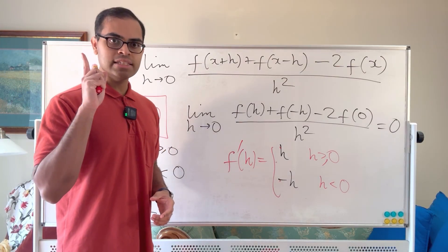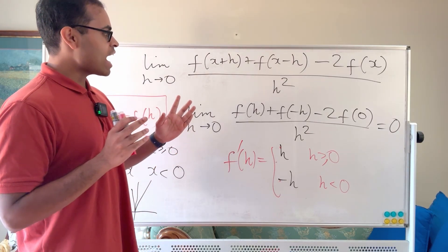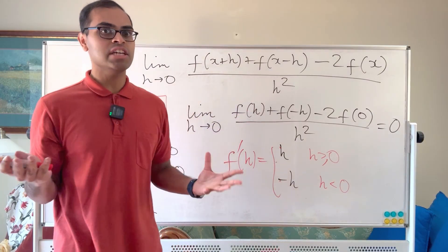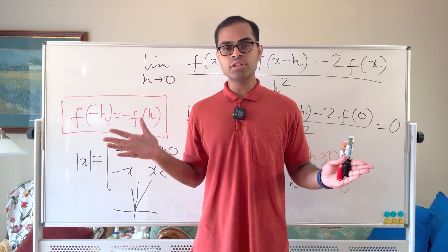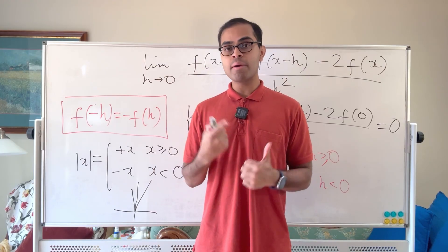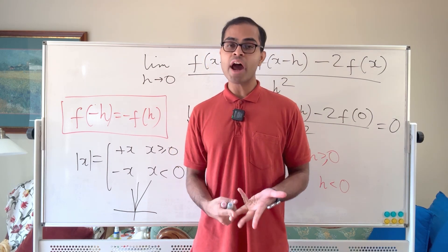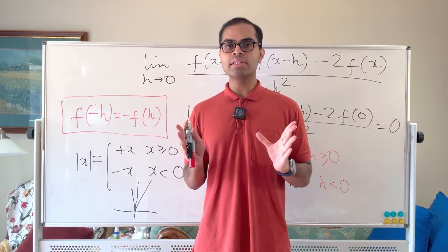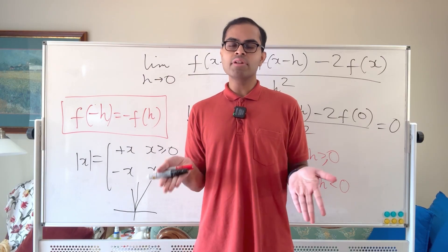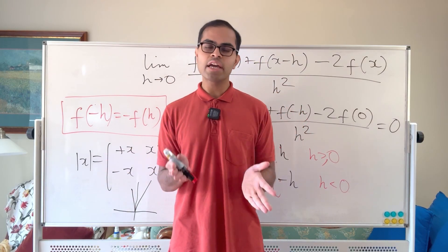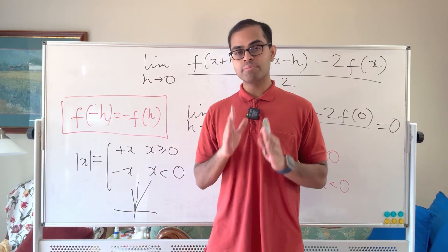Now I have a challenge for you: can you find an example of an odd function whose first derivative at zero doesn't exist? That would be an even stronger example where this limit exists but the first derivative itself doesn't exist. Drop a comment below. Thanks so much to Alex and Nathan for their ongoing Patreon support — it makes a huge difference to my channel. I love creating free accessible math education and helping as many people as possible, and with your support I can make the channel really big and help even more people.